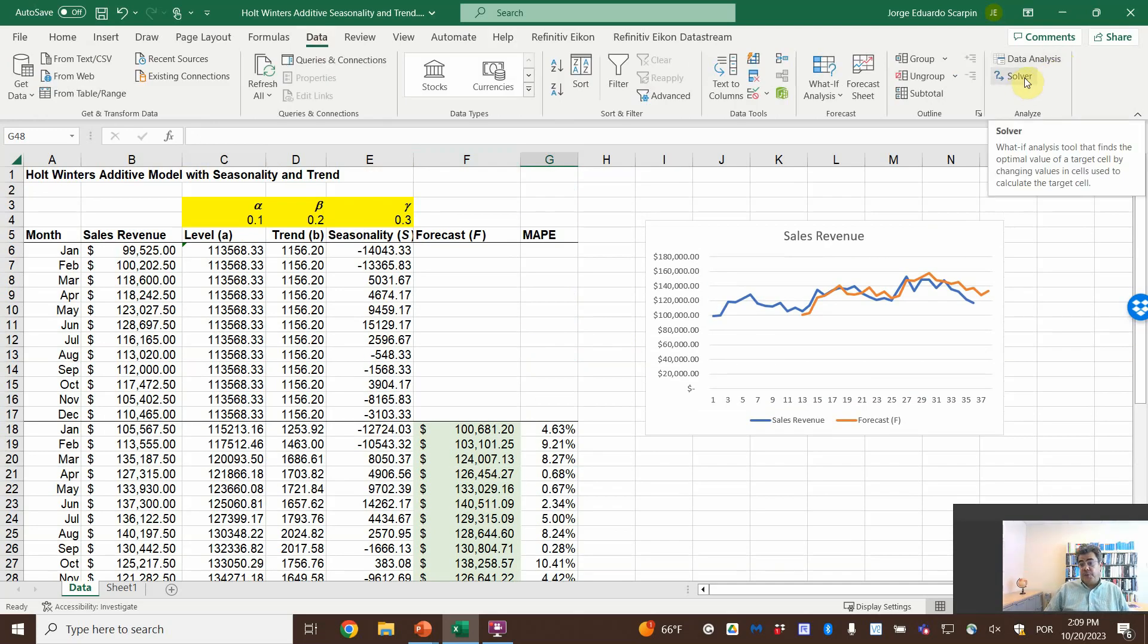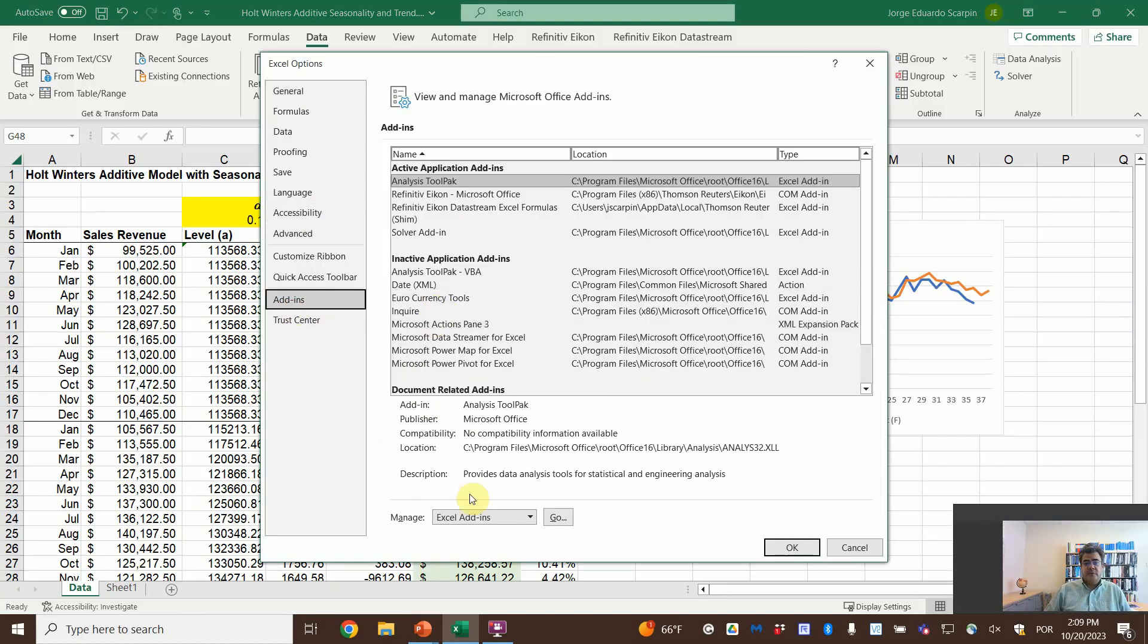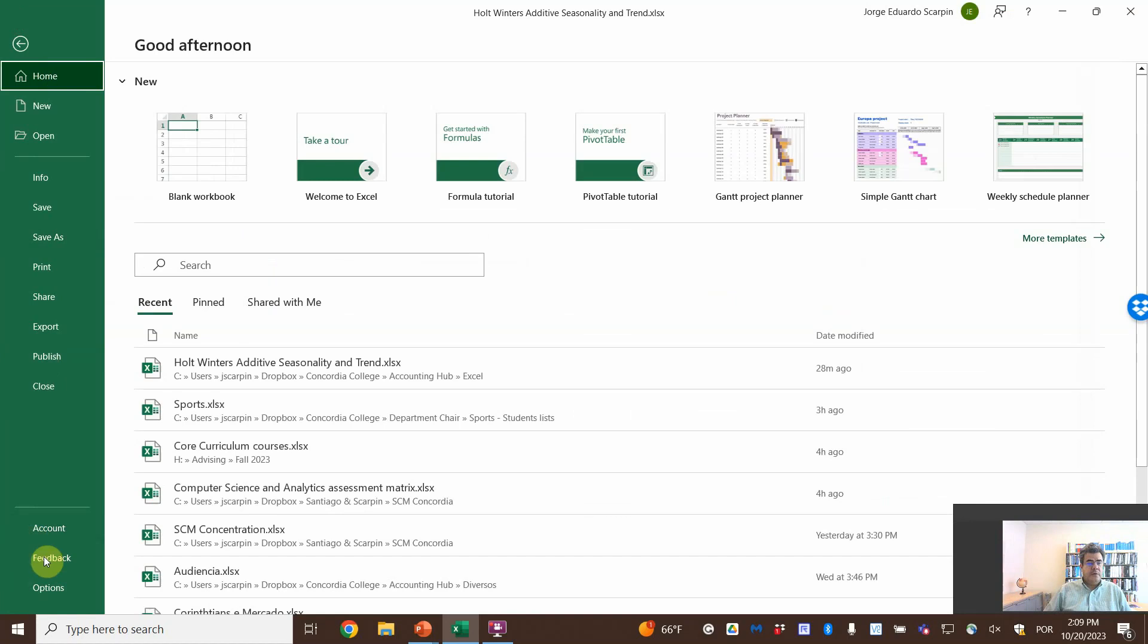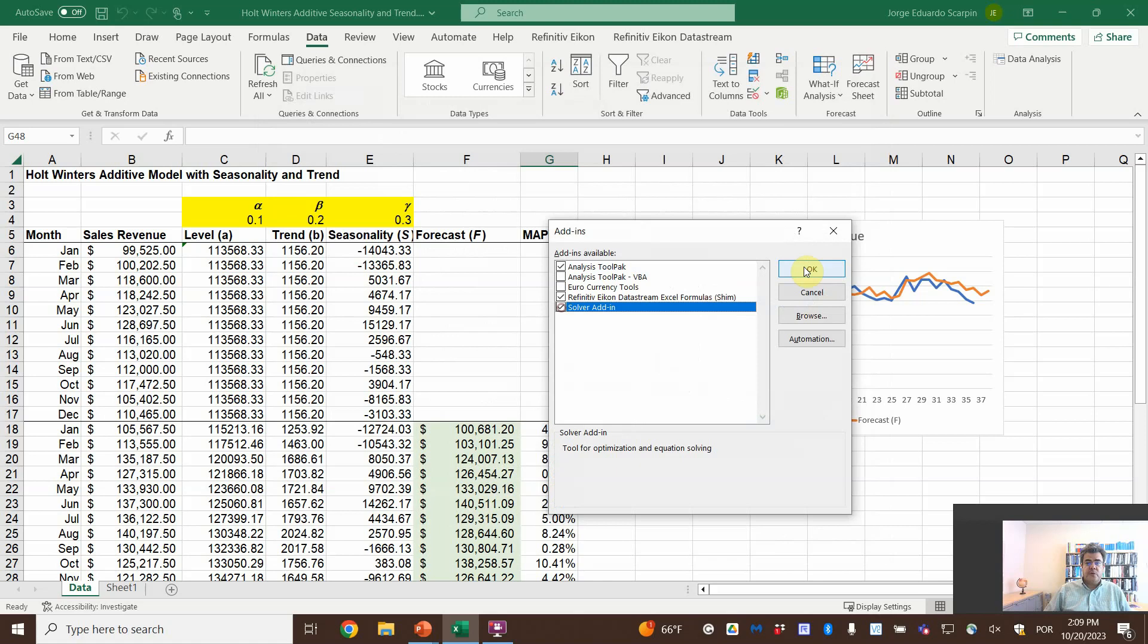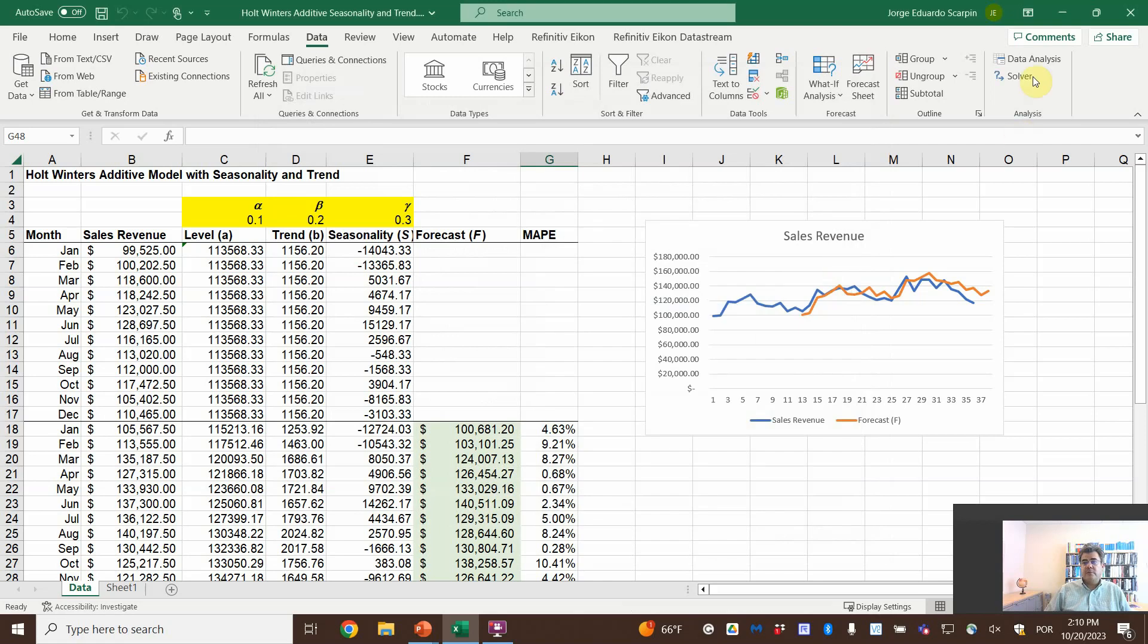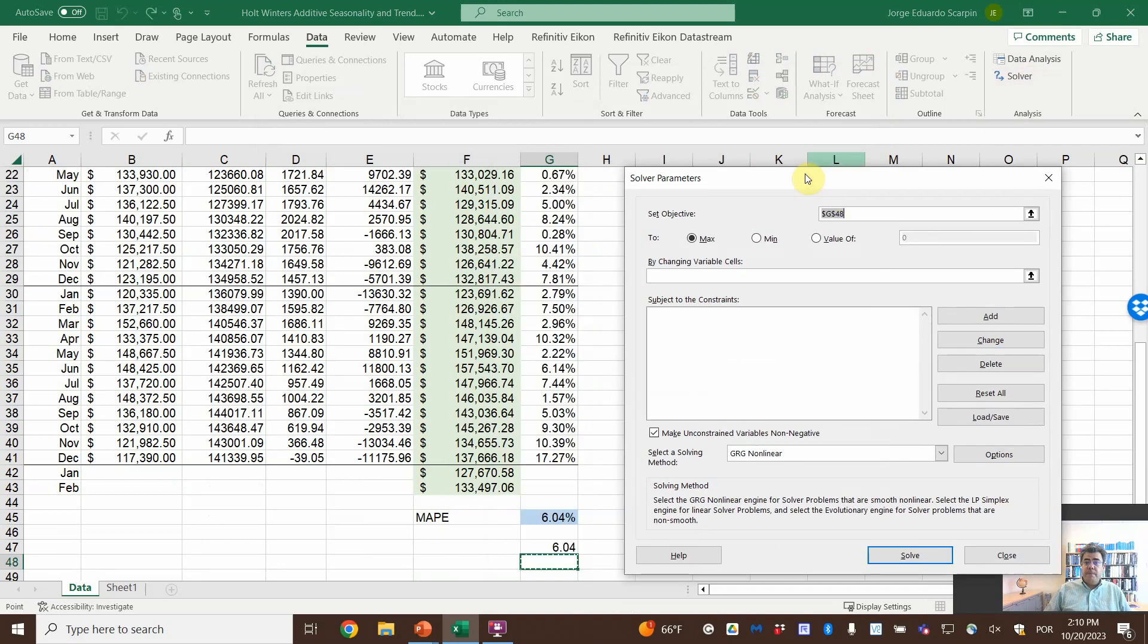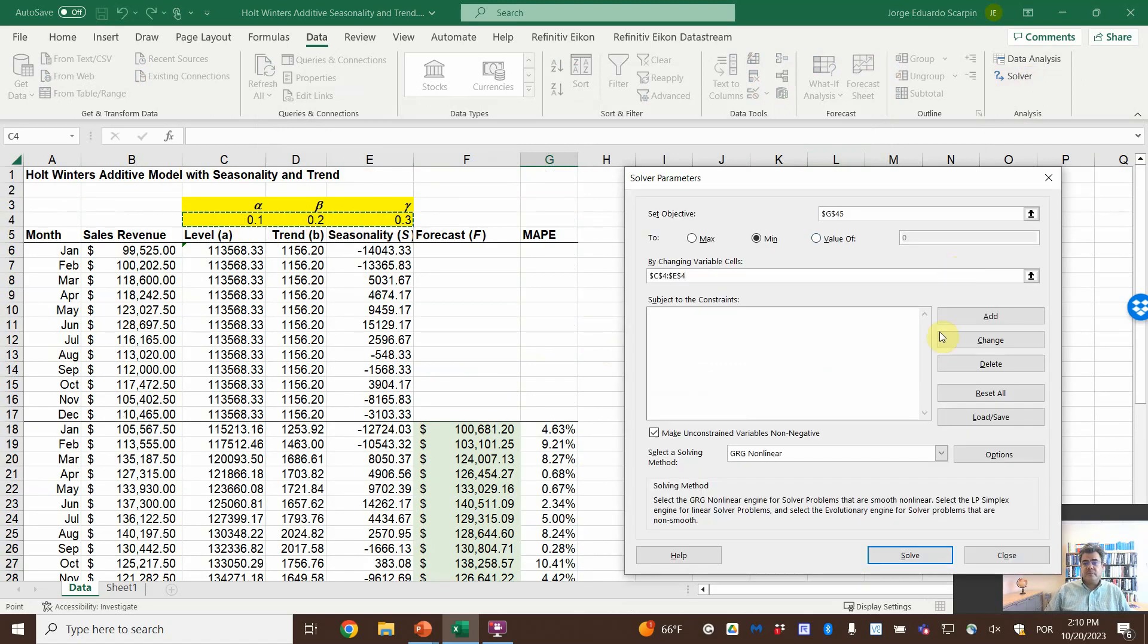If you don't have solver, just go file, options, add-ins, Excel add-ins, go, and solver. So if I uncheck here, the solver will disappear. If I go back here, solver will be here. So let's do it, solver, what do we want? We want to minimize the main, the medium, or the mean absolute percentage error. So we will minimize it by changing these three cells. And solve.